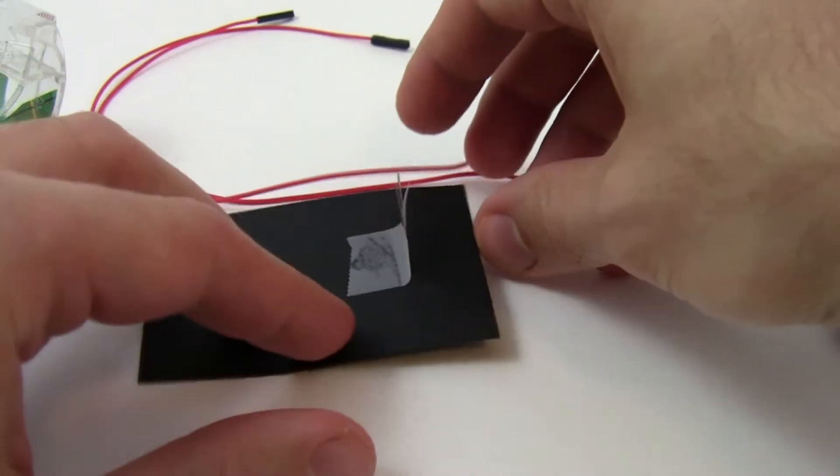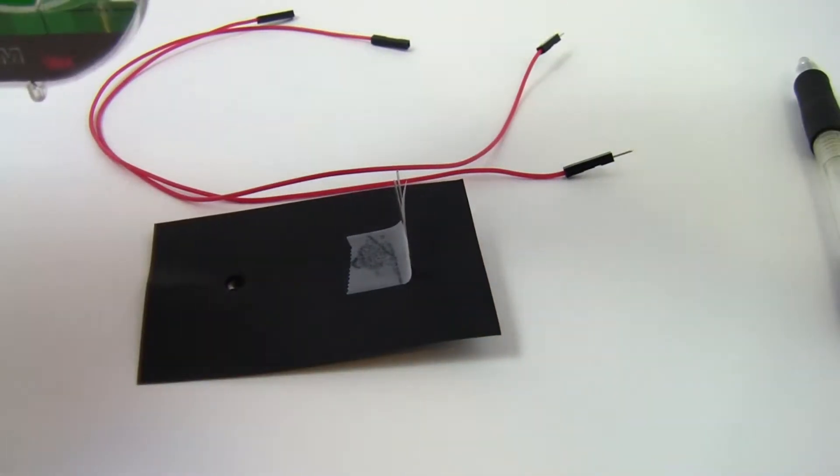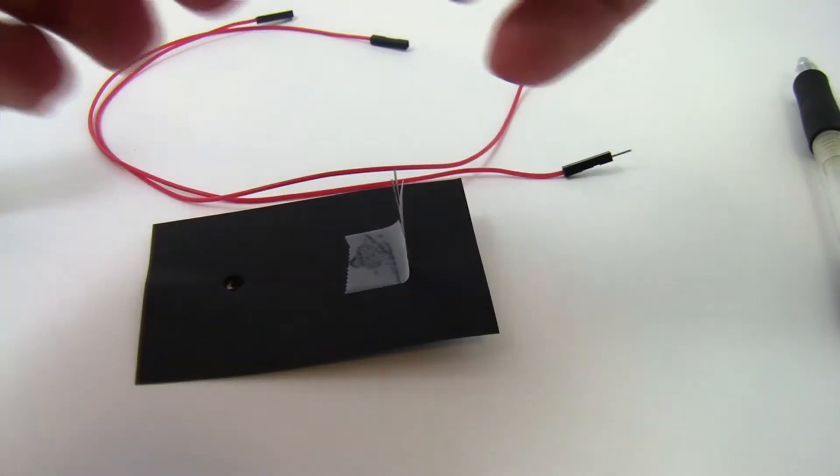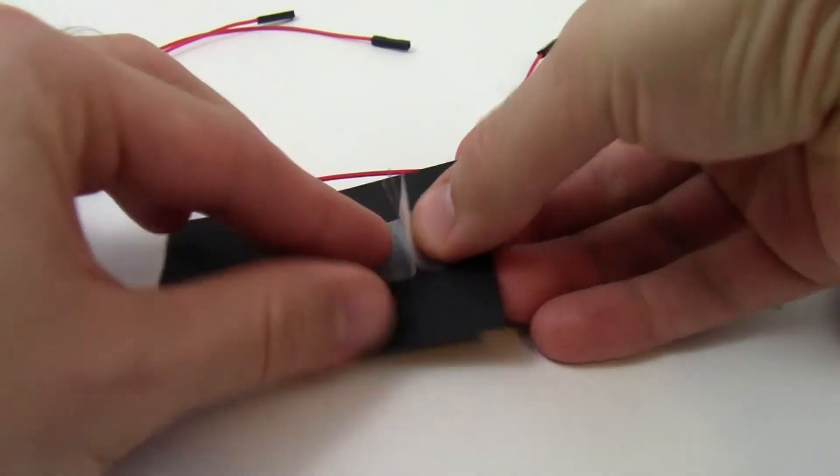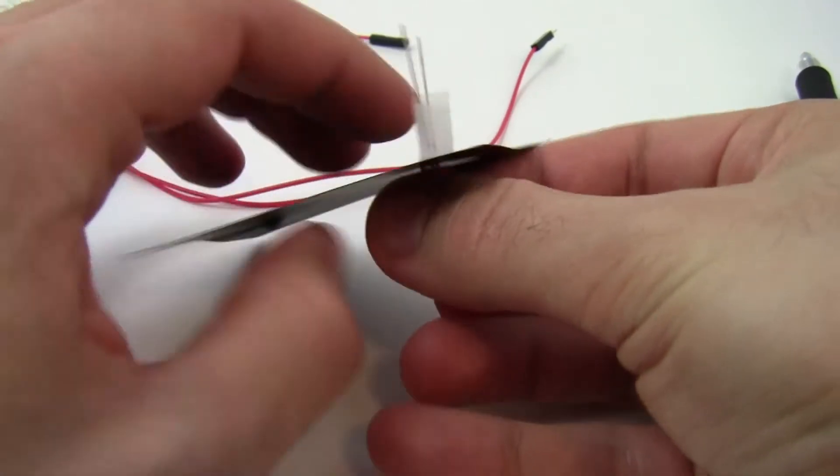There's one on that side and then I'm just going to take another short piece of tape and put it on this side. So now the LED isn't as likely to fall out.